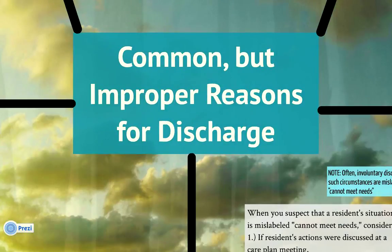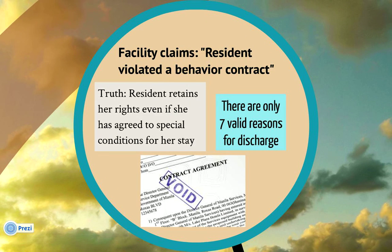Now let's look at some common but improper reasons for transfer or discharge. Sometimes a facility will require the resident to sign a behavioral contract, and later claim that the resident violated the contract as a reason for discharge. The truth, however, is that a resident retains her right to stay in the facility even if she has agreed to special conditions for her stay. There are only seven valid reasons for discharge, and a resident cannot voluntarily contract into more. As an ombudsman, you can advocate for residents and help them avoid signing these kinds of contracts in the first place.